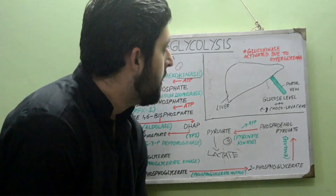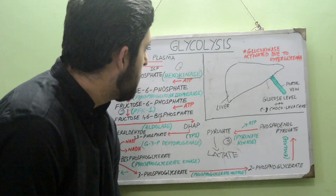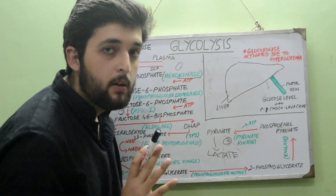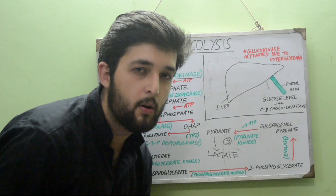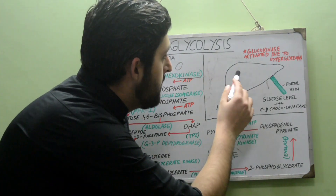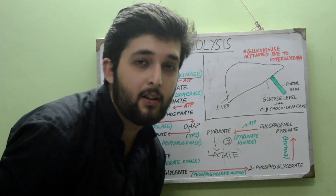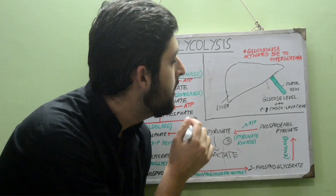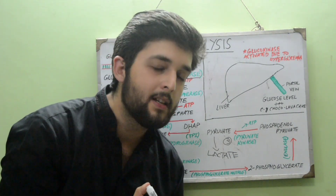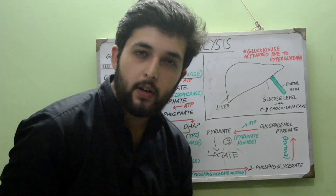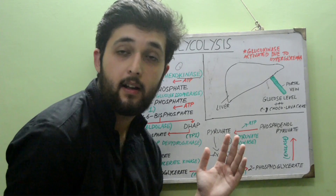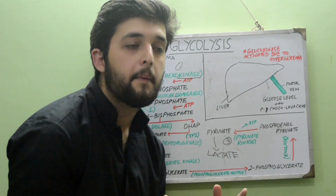Hexokinase has four isoforms. The first three are found in all cells. The fourth isoform, called glucokinase, is exclusive to liver cells and pancreatic beta cells. The liver receives highly glucose-rich blood via the hepatic portal vein. Glucokinase has a very low affinity for glucose, unlike the other three hexokinase isoforms.